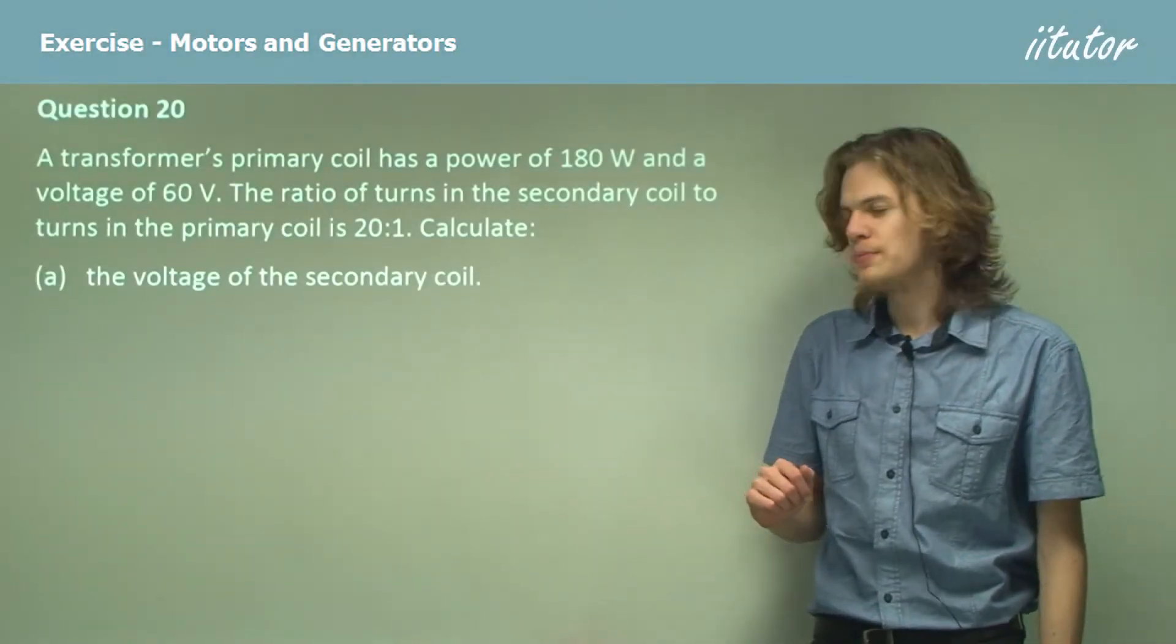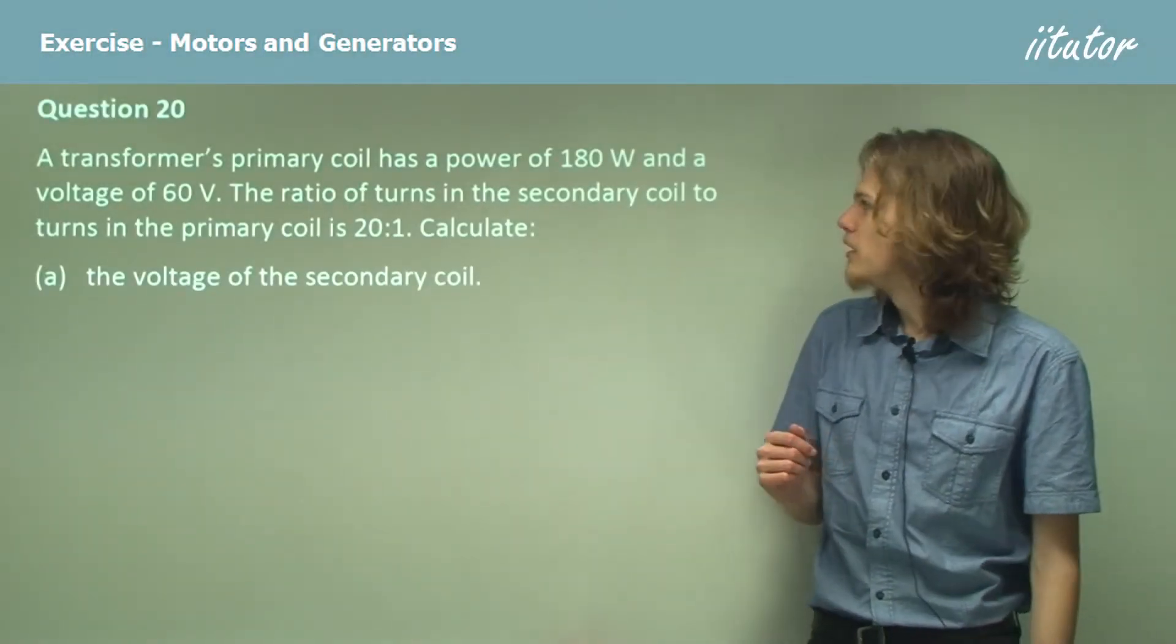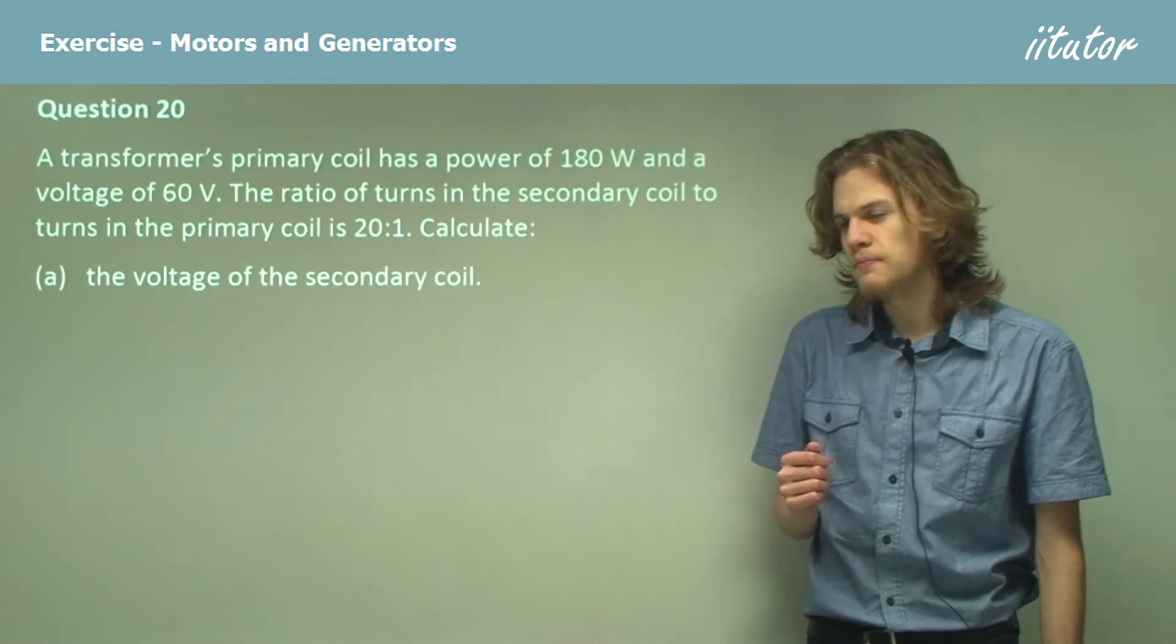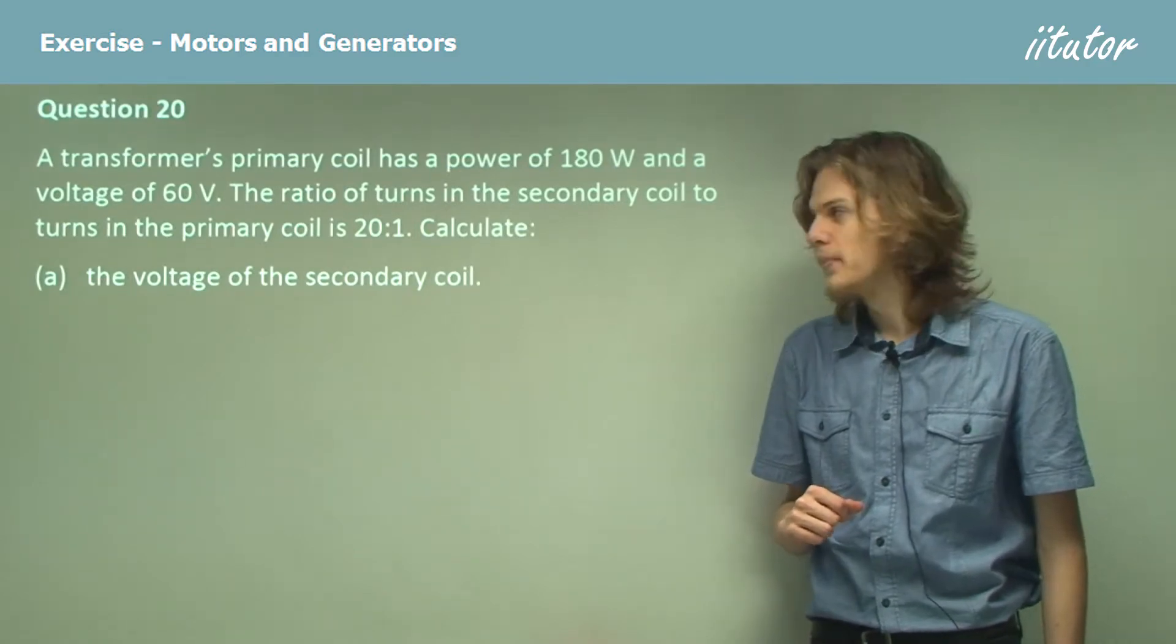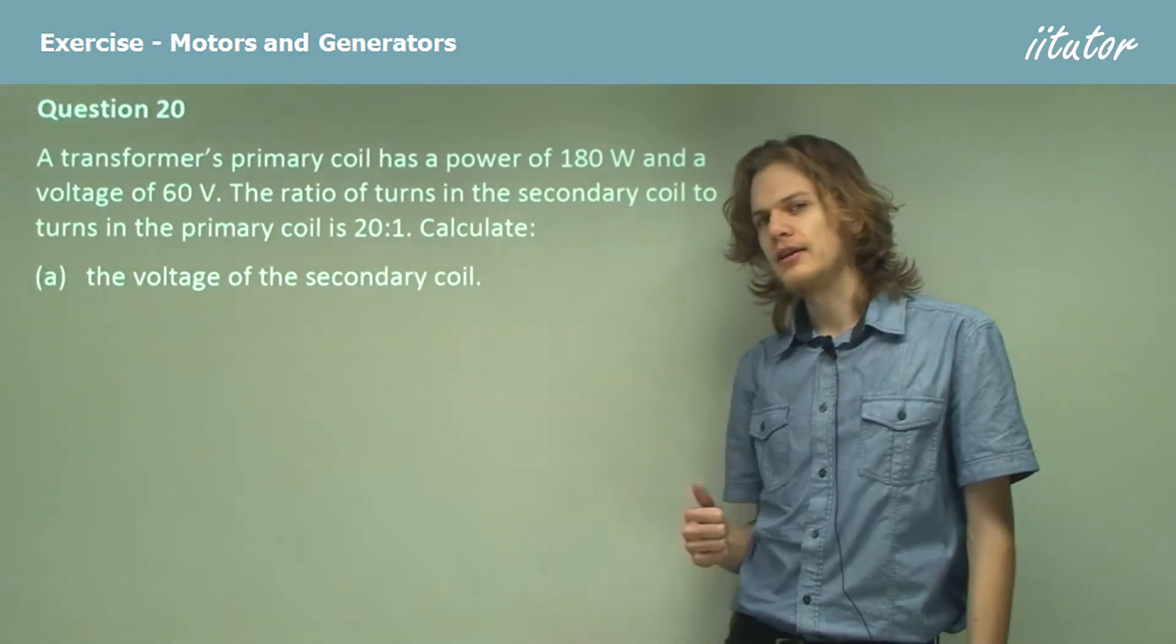A transformer's primary coil has a power of 180 watts and a voltage of 60 volts. The ratio of turns in the secondary coil to turns in the primary coil is 20 to 1. Calculate the voltage of the secondary coil.